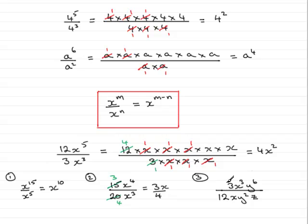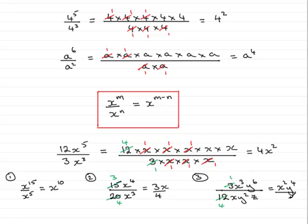In the final example, cancel a 3 between the 3 and the 12: 3 into 3 goes 1, and 3 into 12 goes 4. Then x cubed divided by x gives x to the power 2, so we have x squared — no need to write the 1. For the y's, y to the power 6 over y squared reduces to y to the power 4. There are no other z's, so z stays on the bottom. We mustn't forget the 4, giving 4z on the bottom. So the answer is x squared y to the power 4 over 4z.